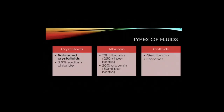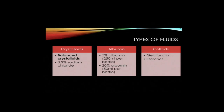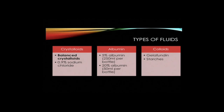Crystalloids include balanced crystalloid solutions and normal saline. Excess chloride content in normal saline may cause a normal anion gap acidosis, and there may be evidence that excess saline is associated with increased risk of renal failure. Hartmann's solution and commercially available balanced electrolyte solutions such as Plasmalyte or Sterofundin are examples of balanced crystalloids. Colloids in the form of 5% or 20% albumin may also be used. Hydroxyethyl starch solutions are not recommended in critically ill patients because of an increased risk of kidney injury or mortality.